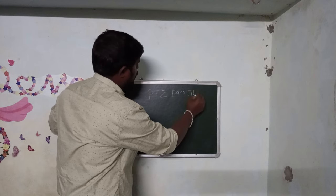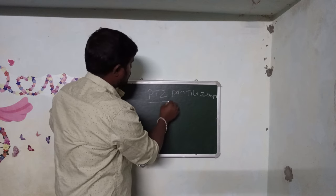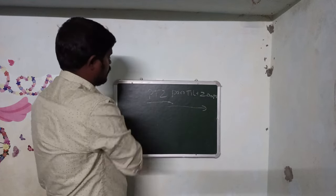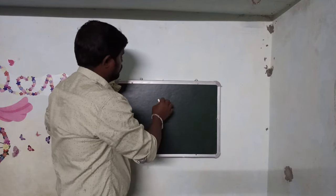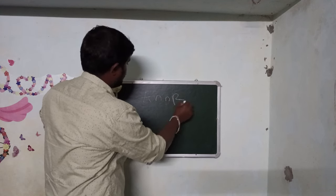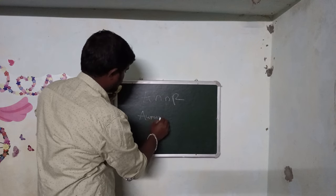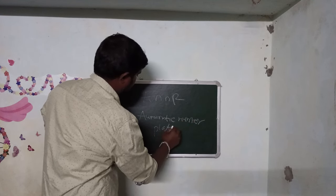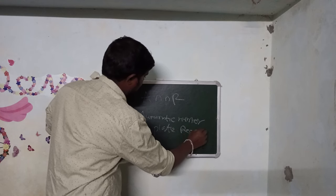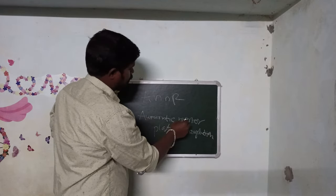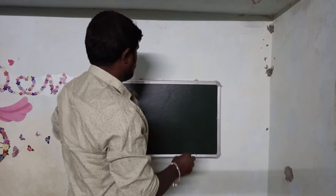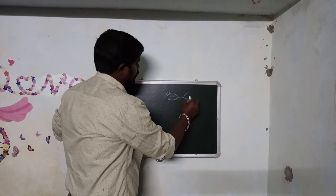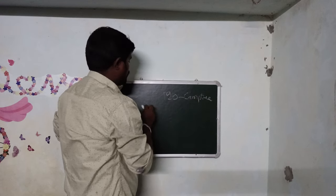PTZ cameras allow zoom functionality. You can zoom in clearly even from a distance of one kilometer. NPR cameras are for Automatic Number Plate Recognition.